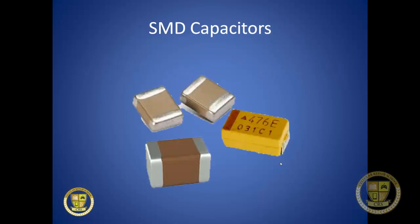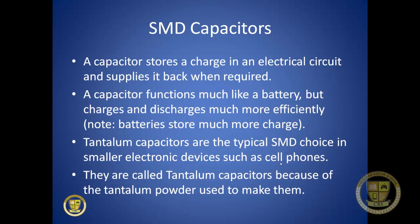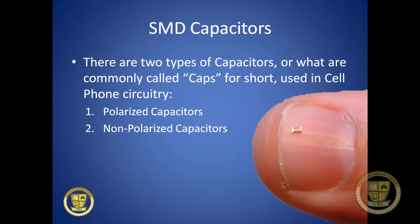SMD capacitors come in a few different style packages and are very common on cell phones. A capacitor stores a charge in an electrical circuit and supplies it back when required — it functions a lot like a battery but charges and discharges much more efficiently and quickly, though batteries store much more charge. Tantalum capacitors are the typical SMD choice in smaller electronic devices like cell phones, named after the tantalum powder used to construct them. Some capacitors can be as small as a grain of sand.